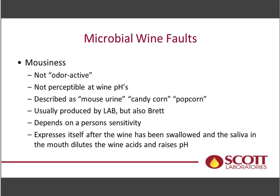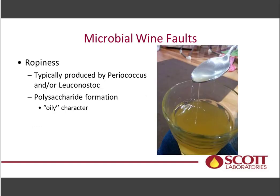If you've got ropiness, you probably also have mousiness and Brettanomyces. Ropiness is typically produced by Pediococcus and/or Leuconostoc — both lactic acid bacteria. The wine looks very oily, because these organisms produce polysaccharides that make the wine viscous. It doesn't happen very often but typically occurs in conjunction with other faults.